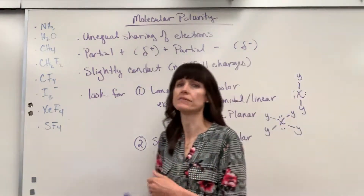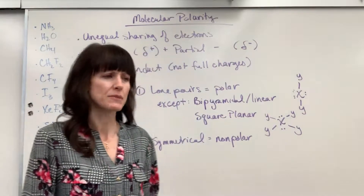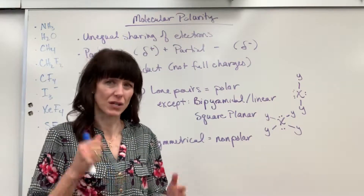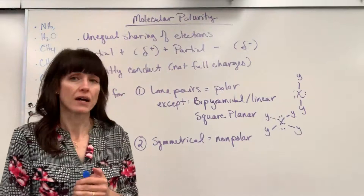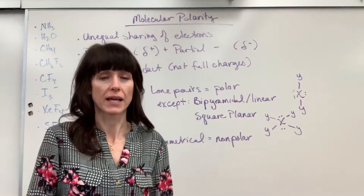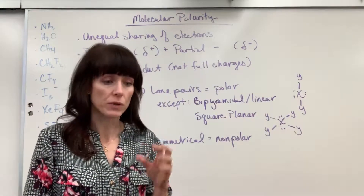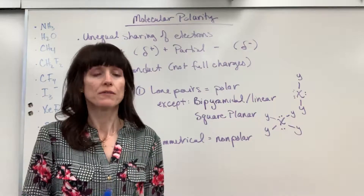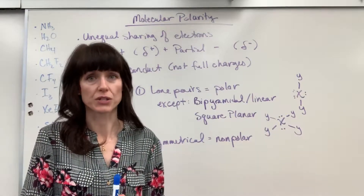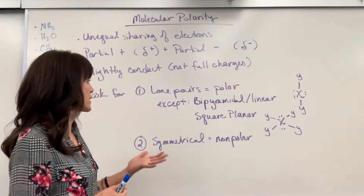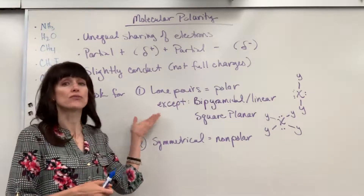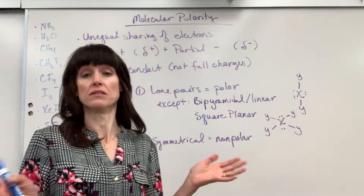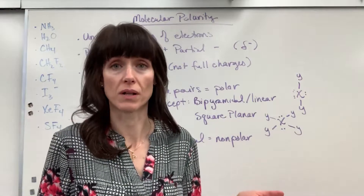Now I have two big takeaways. Sometimes polarity is a little ambiguous and hard for students to pin down. When you look at a molecule, here's how you can determine if it's polar or not. First, you've got to draw the Lewis dot structure. After you draw it, you are looking for lone pairs. If there are lone pairs on the central atom — done, it's a polar molecule.